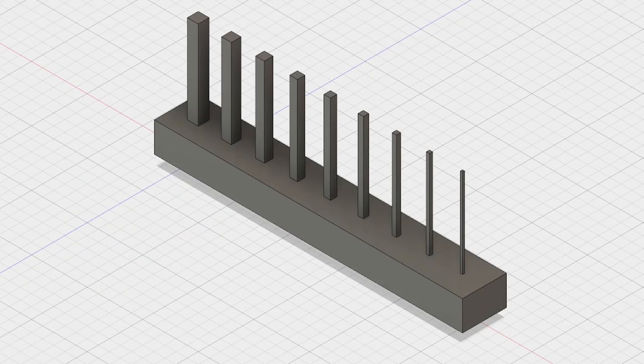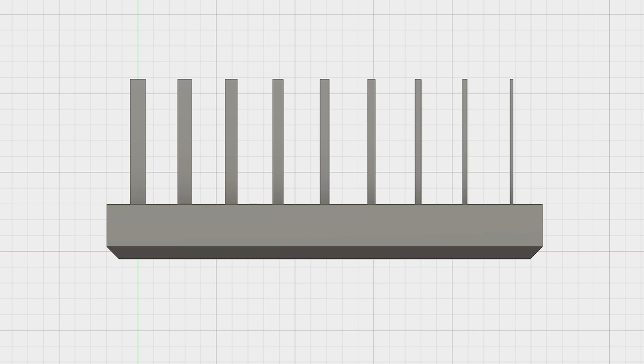Let's say we have a model with small positive features. These square posts range from 500 to 100 microns in width, and they're 4 millimeters tall.